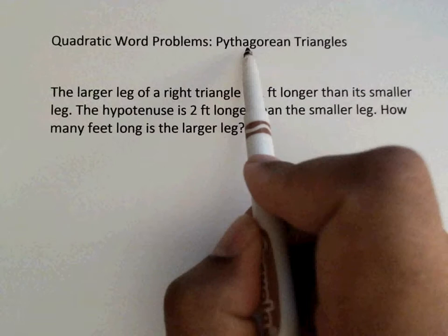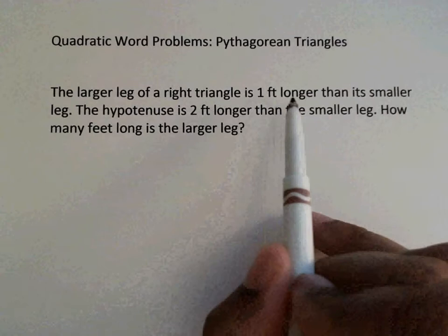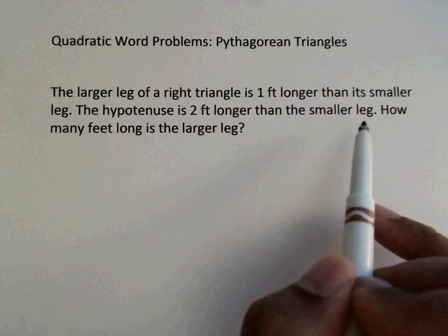So in this problem it says the larger leg of a right triangle is one foot longer than its smaller leg. The hypotenuse is two feet longer than the smaller leg. How many feet long is the larger leg?